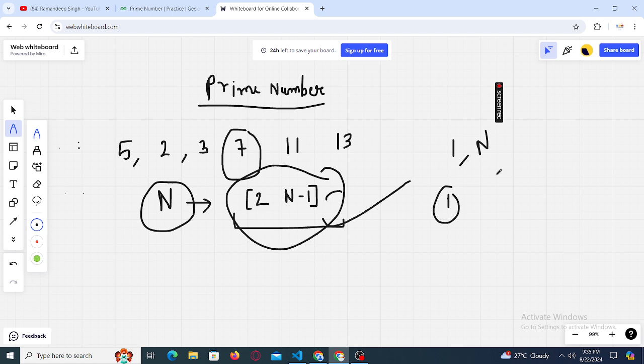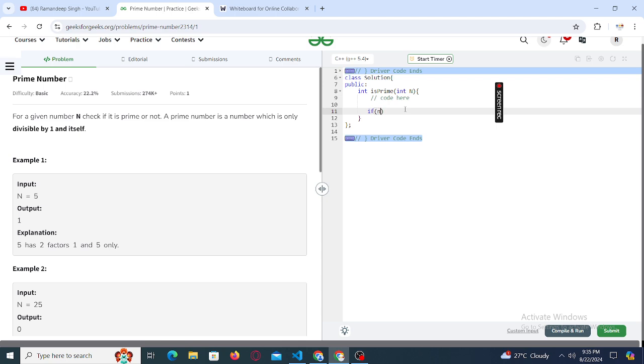So if n is equal equals to one, we'll return zero right from here because one is not a prime number. And if n is equal equals to two, then we'll return one because two is a prime number.